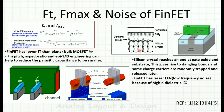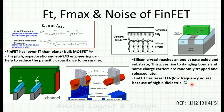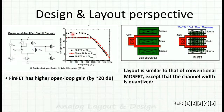Regarding noise — specifically low-frequency flicker noise — in a planar MOSFET the interface between the polysilicon gate oxide (SiO2) and the channel has dangling bonds, which give rise to flicker noise. In FinFET, a high-K dielectric replaces the SiO2 between gate and channel, eliminating these dangling bonds. As a result, flicker noise is significantly lower in FinFET.